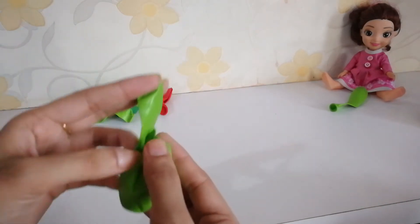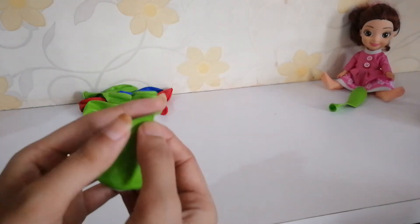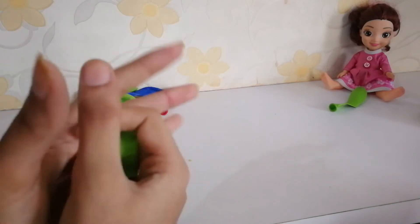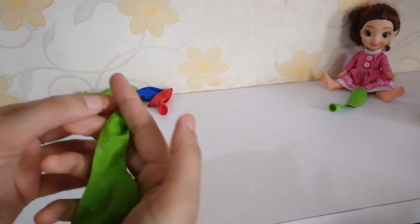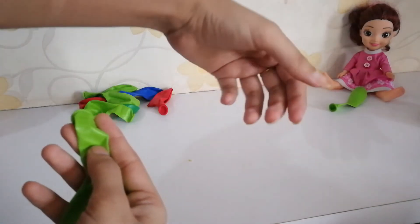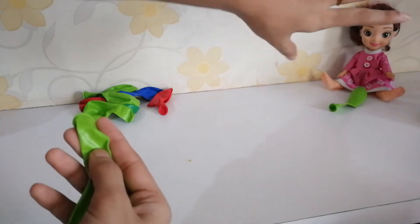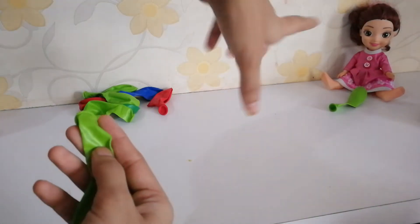This means, jab koi cheez aapke paas hai, aapse close hai, aapse near hai. Aur jab koi cheez aapse door hai, far away hai. Okay, far, door hai. To usse aap bologe that.